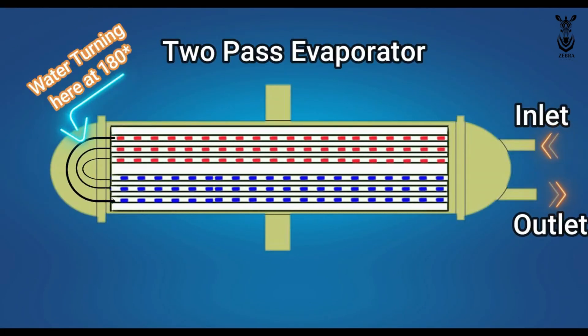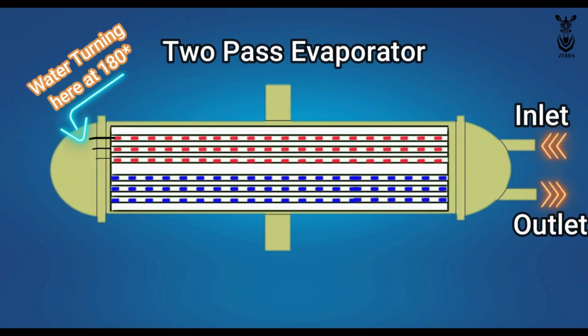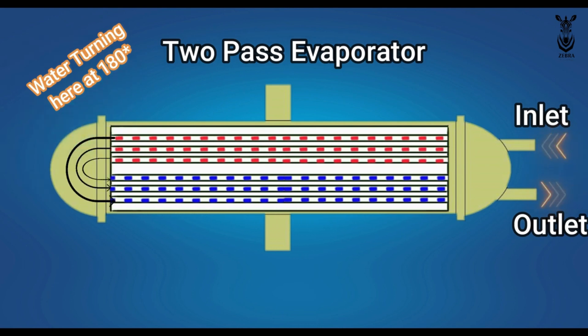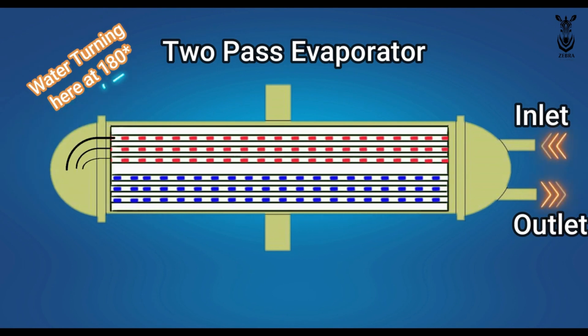If the water that comes in from one side turns 180 degrees on the other side of the evaporator and comes out through the same way, it is a two pass evaporator.